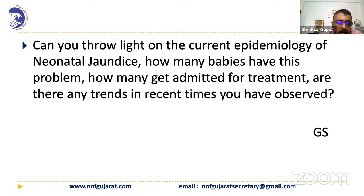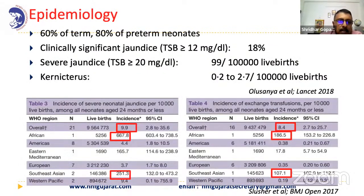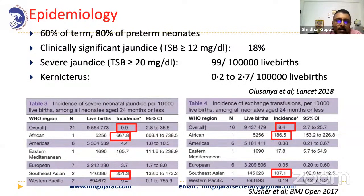Good afternoon. Thank you NNF Gujarat, the President, Secretary, and moderator Dr. Chawla for this opportunity. As we all know, neonatal jaundice is a very common condition — almost 60% of term babies and about 80% of preterm babies have neonatal jaundice visible in the first week of life. Why are we so concerned? It seems easily treatable, but a recent paper from The Lancet showed incidence of clinically significant jaundice is almost 18% of live births.